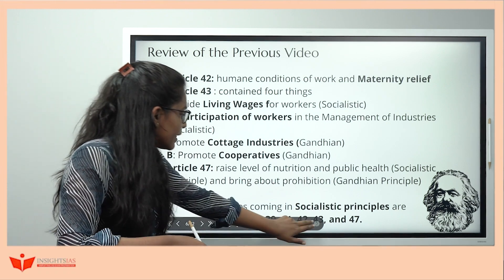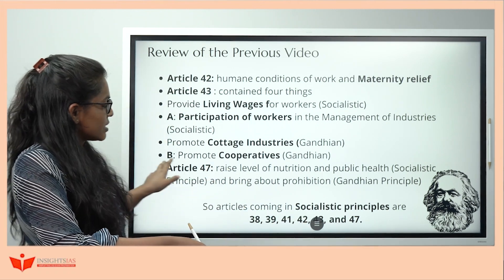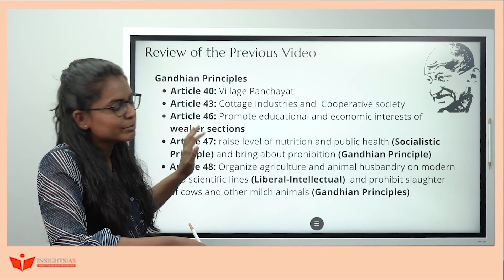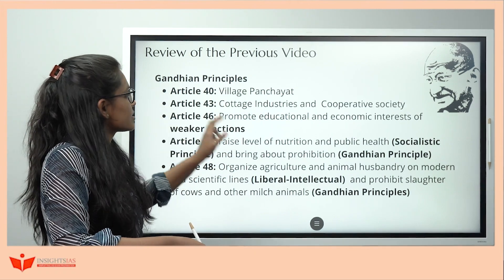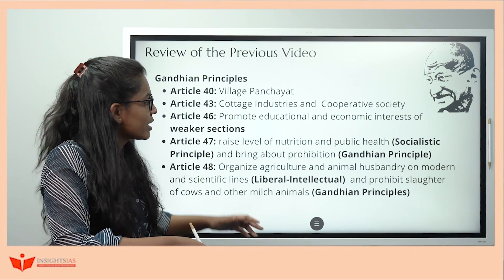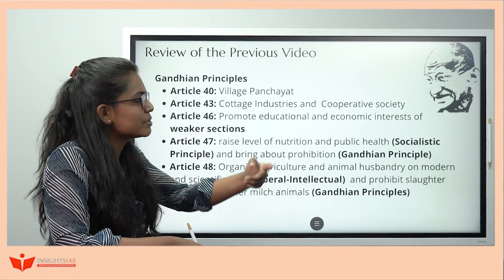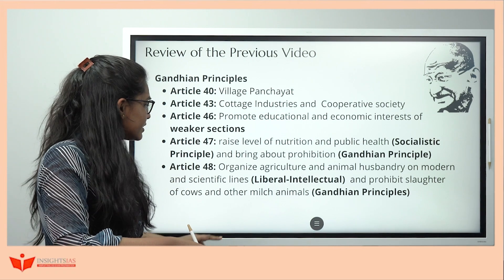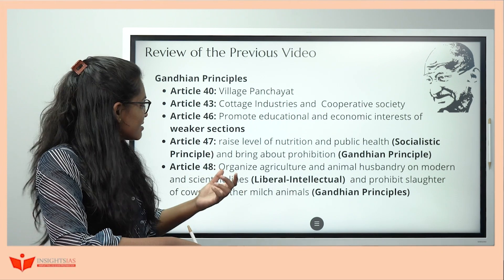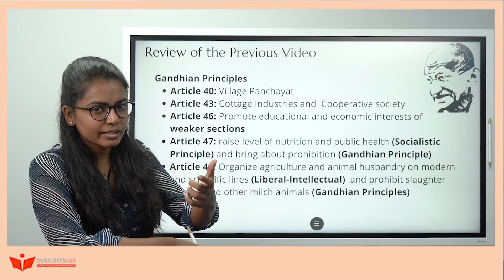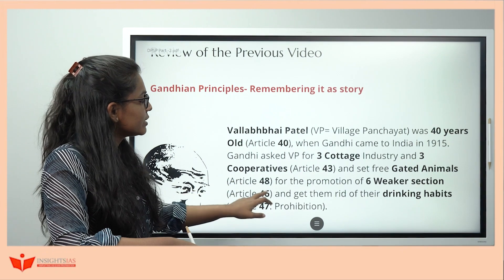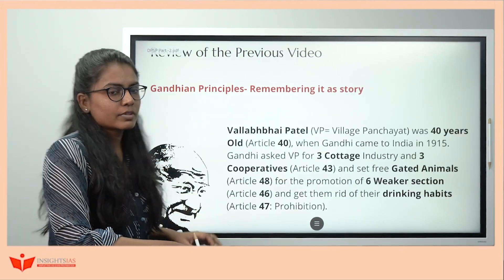For Gandhian principles, we remember Vallabh Bhai Patel. Article 40 — when he was 40 years of age, Gandhi came to India in 1915. Article 43 — cottage industries, same as workers. Article 46 — promote weaker sections. Article 47 — prohibition. Article 48 — organized agriculture and animal husbandry, prohibit slaughter. We remembered it as 'gated animals' — 8 rhymed with gate. Article 48 had both Liberal Intellectual and Gandhian principles.